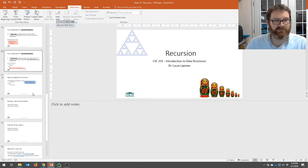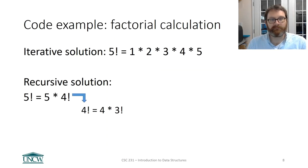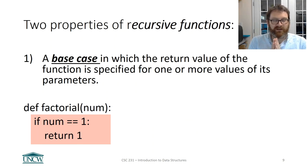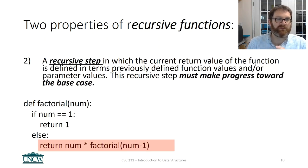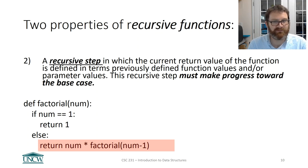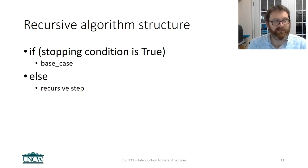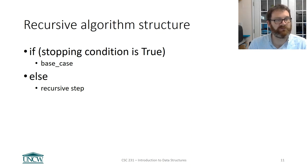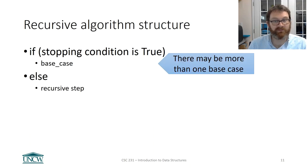Let's wrap up. Every recursive function must have two things: a base case — where the return value is specified for one or more values of its parameters — and a recursive step — where the current value is defined in terms of previously defined function values and/or parameter values. The recursive step must make progress toward the base case. Most recursive algorithms follow the structure: if base case, return; else do the recursive step. There may be more than one base case.